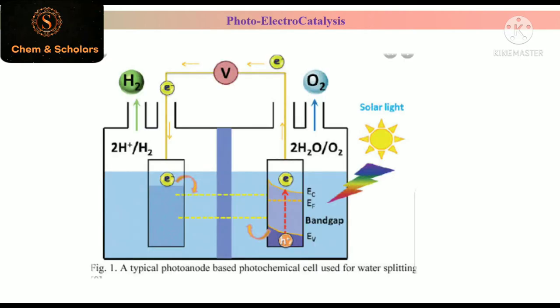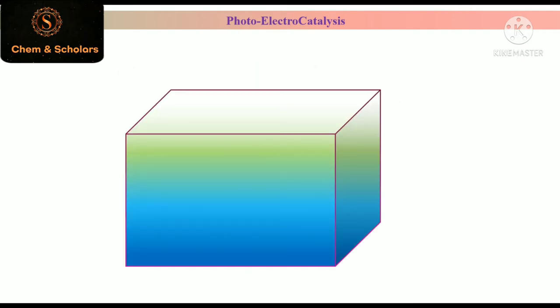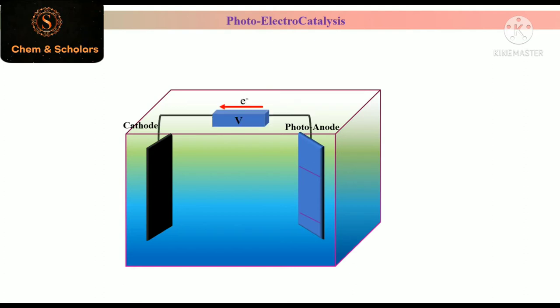Now come to the component and working of PEC cell. Generally, a Photoelectro-Catalysis cell consists of a cell filled with electrolyte and two electrodes immersed in it. These electrodes are connected to each other with the help of an external biasing system. As I talked about utilization of photons.